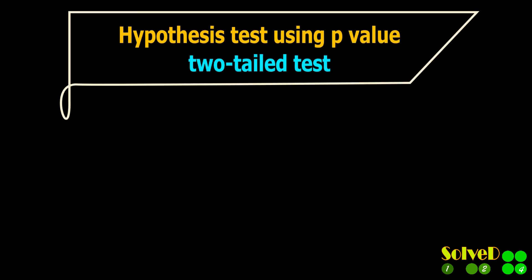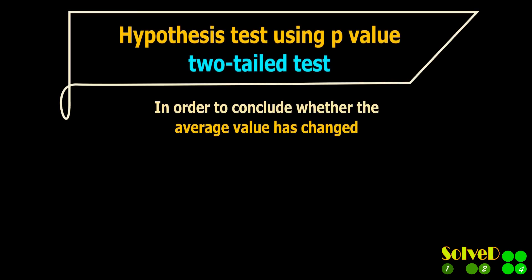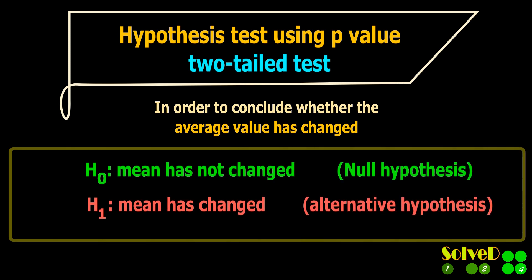Hypothesis test using the given p-value. In order to conclude whether the mean value has changed, the null hypothesis is that mean value has not changed, and the alternative hypothesis is that mean has changed.